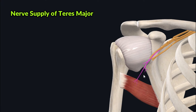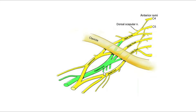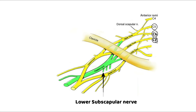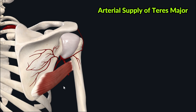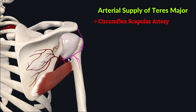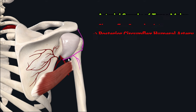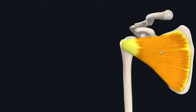The teres major also performs shoulder extension and hyperextension, acting synergistically with the latissimus dorsi. For nerve supply, it is supplied by the lower subscapular nerve, arising from the posterior cord of the brachial plexus with C5, C6, and C7 nerve roots. Its arterial supply comes from the circumflex scapular artery and the posterior circumflex humeral artery.